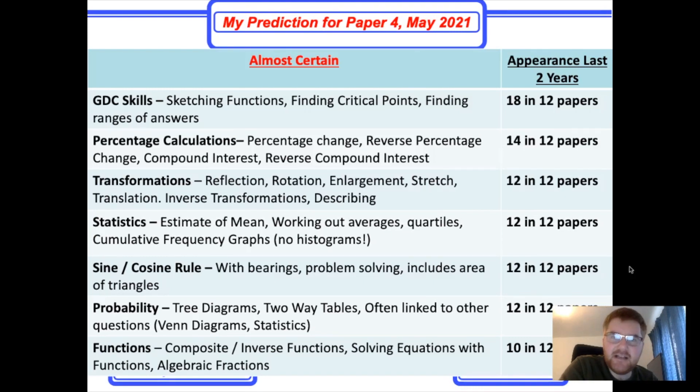Second is percentage calculations. These are generally pretty similar year on year. There is some percentage change, percentage increase, decrease, reverse percentage change - working backwards to work out the original amount, compound interest question which is just three easy marks, and sometimes reverse compound interest. You need to use some trial and error method or logs to work out the number of years given a particular interest rate. Again, a whopping 14 in 12 papers comes up every year. Make sure you know it.